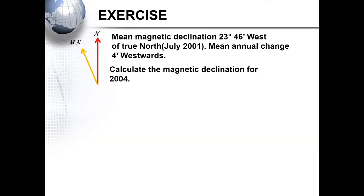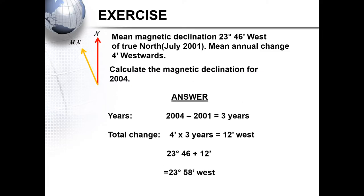Another exercise: magnetic declination of 23 degrees and 46 minutes west, with a mean annual change of 4 minutes westward. Determine the difference in years, calculate the total change, and because the change is west, add it. This gives an answer of 23 degrees and 58 minutes west.